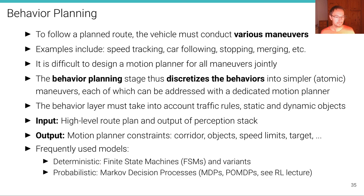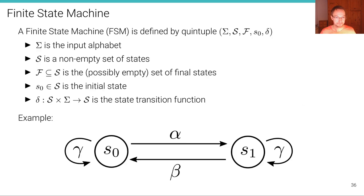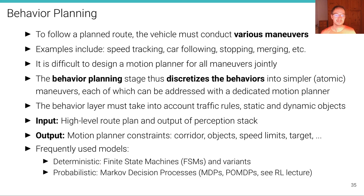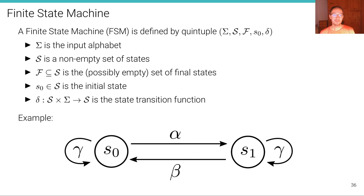Frequently used models for behavior planning are, in the discrete or deterministic case, the finite state machine (FSM) and its variants, and in the probabilistic case, the Markov decision process (MDP) or partially observed Markov decision processes. In this unit, we're going to focus just on the deterministic finite state machine.